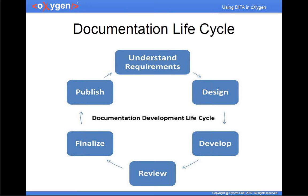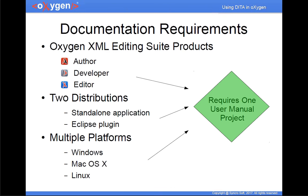For our documentation requirements, we have our Oxygen editing suite — Author, Developer, Editor — and for each we have two distributions: the standalone application and an Eclipse plugin. So for just those three products we need six deliverables, six variants of the user manual. These are also for multiple platforms — Windows, Mac, and Linux — though we chose not to fully profile our user manual for those. We have some platform-specific topics and notes scattered throughout, but for the most part our deliverables are the same for all three platforms, requiring one user manual project.